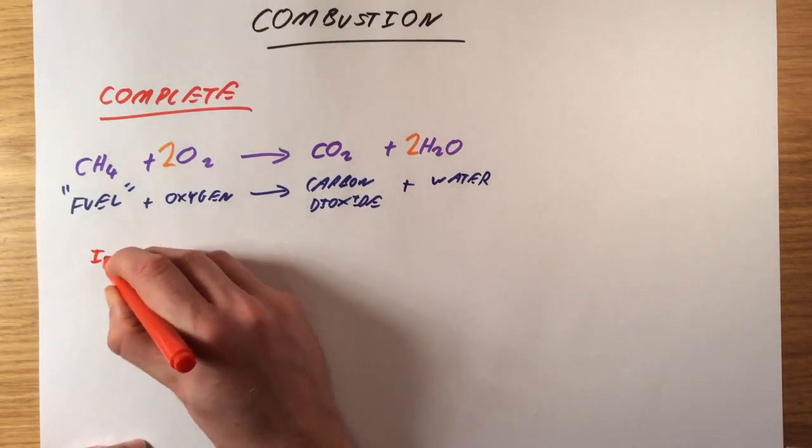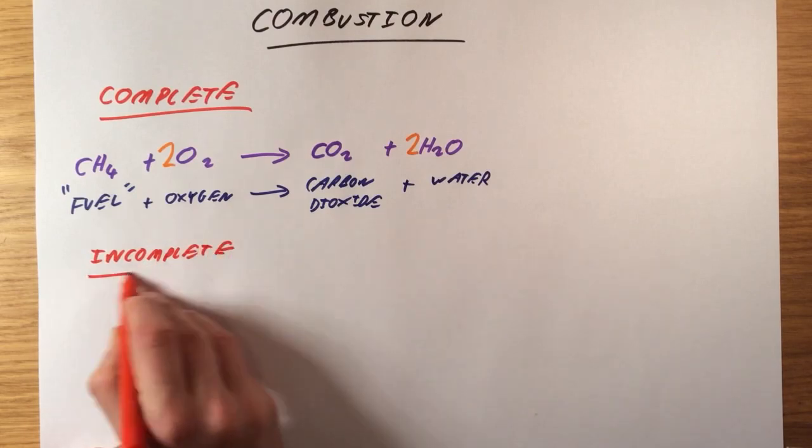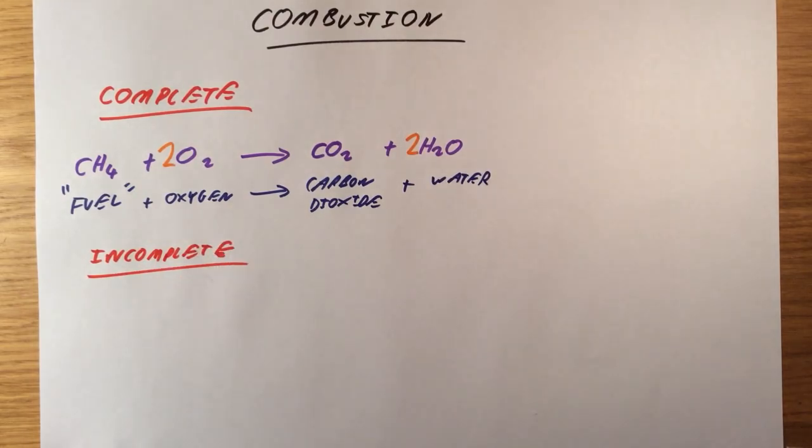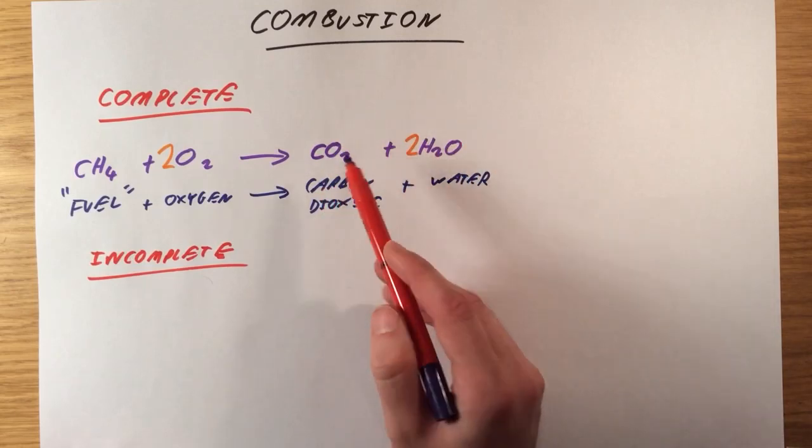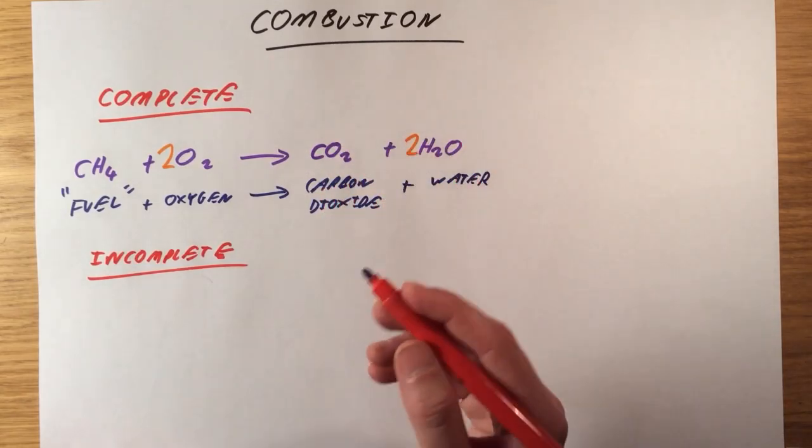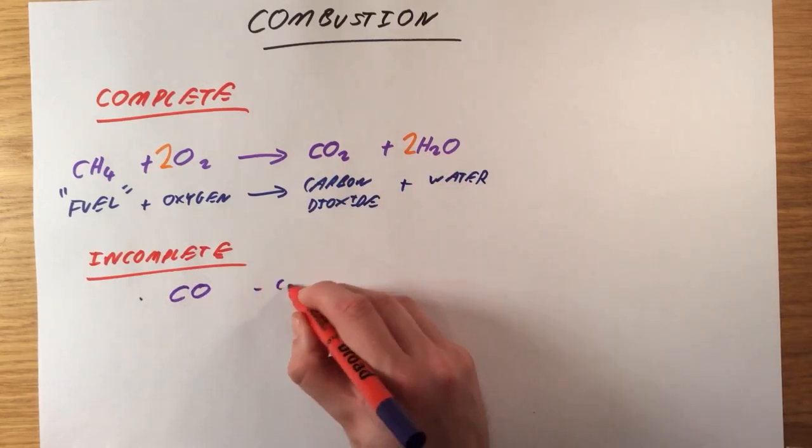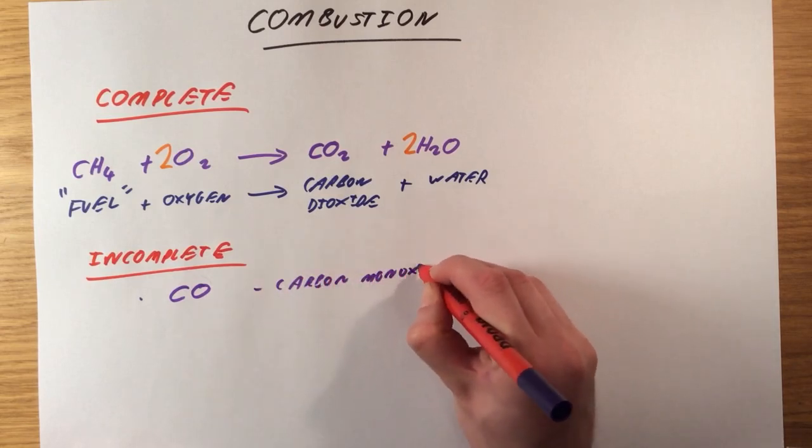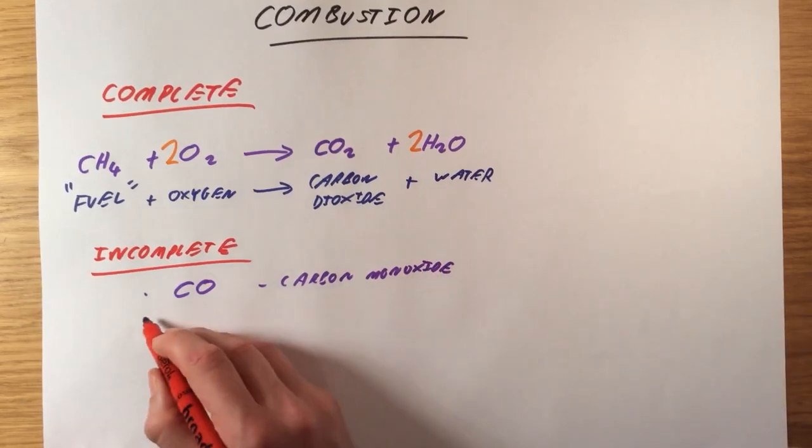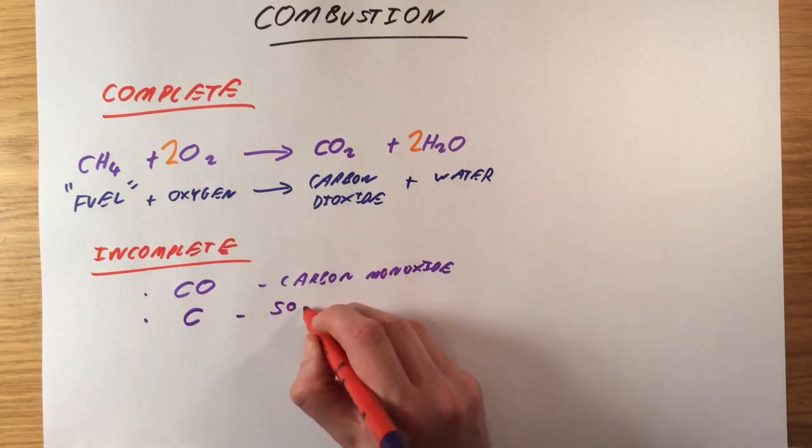However, there is another second type of combustion I can have, which is incomplete combustion. Now, in this type of combustion, I'm actually going to have less oxygen. So what that means is I won't have enough oxygen to make both of these products. There's too much oxygen in. So what else could I produce? Well, the first thing I could produce is carbon monoxide, which is CO. I'm going to talk about some of the dangers of that in a minute. If I have even less oxygen, I'm going to get C, just carbon on its own, which is soot.